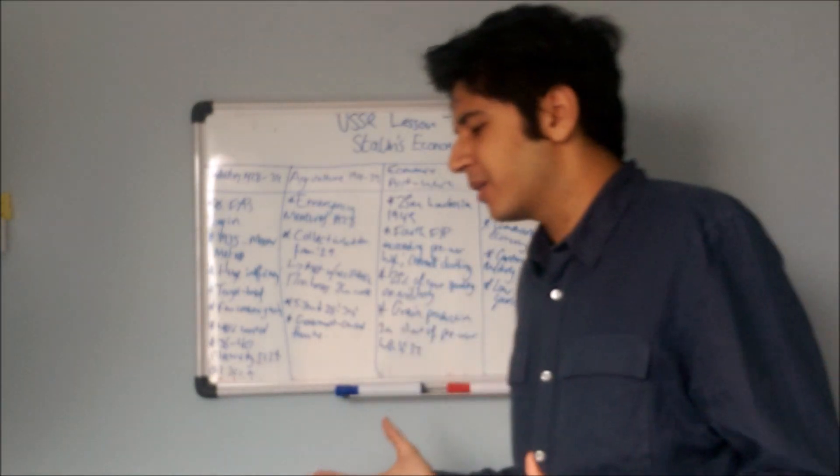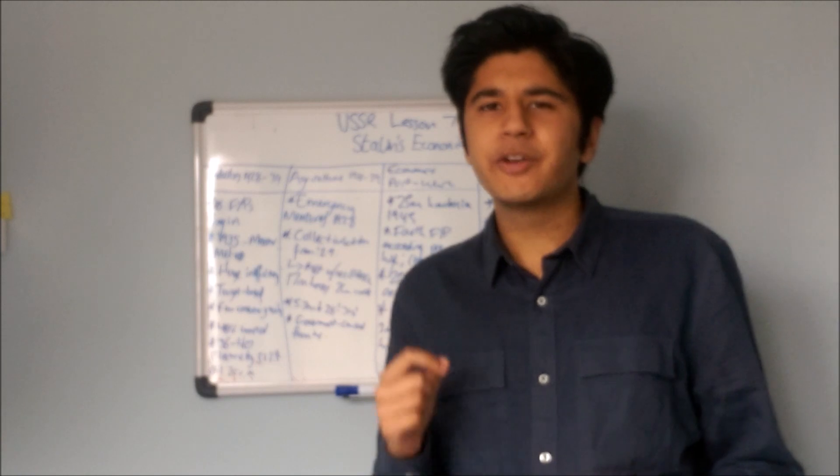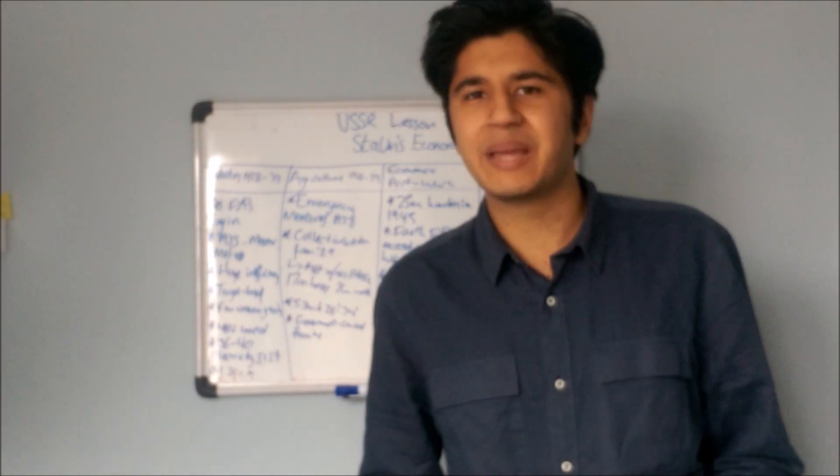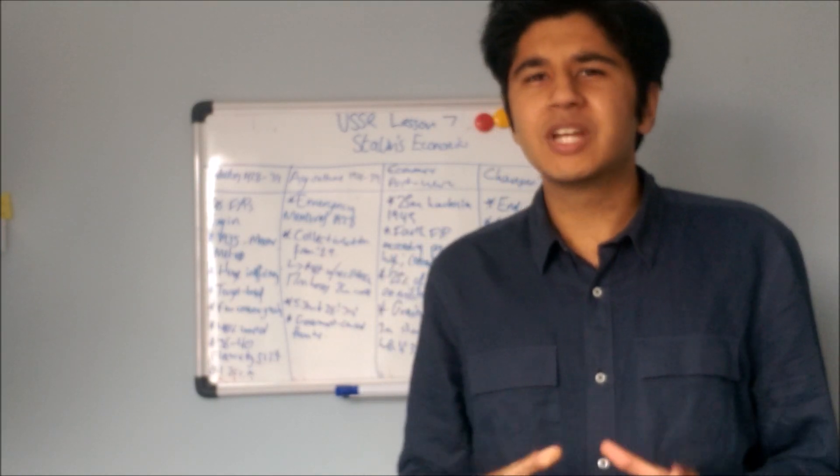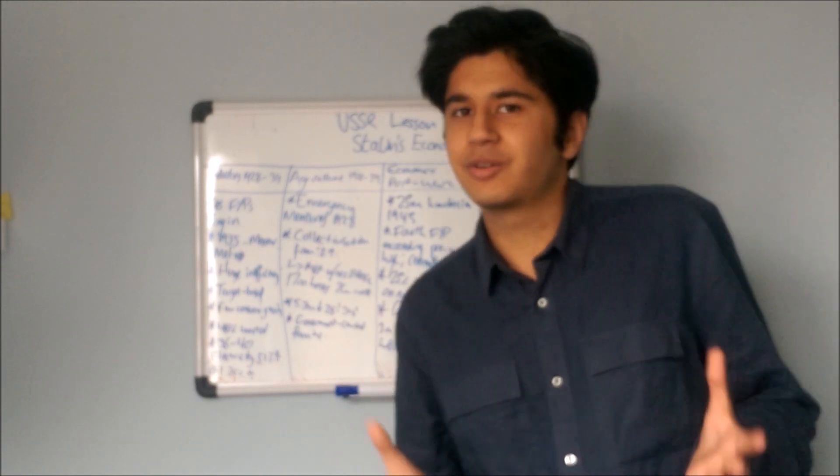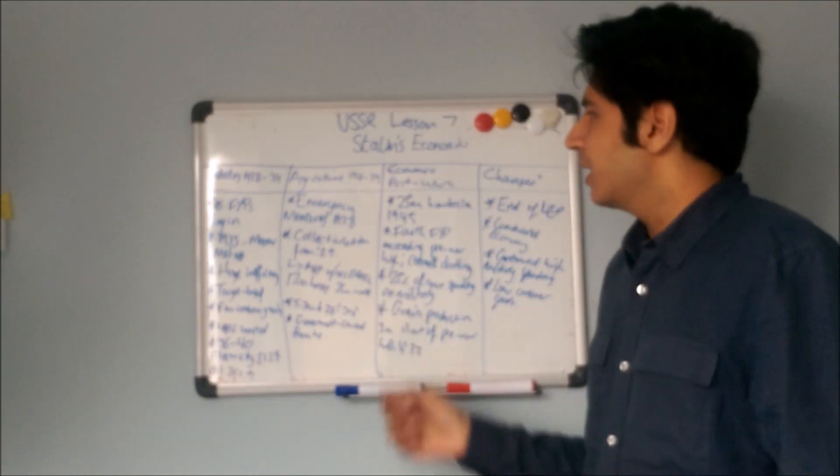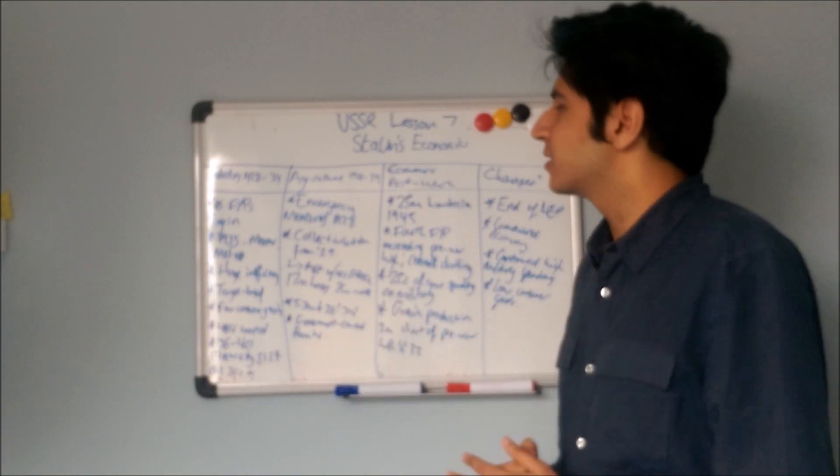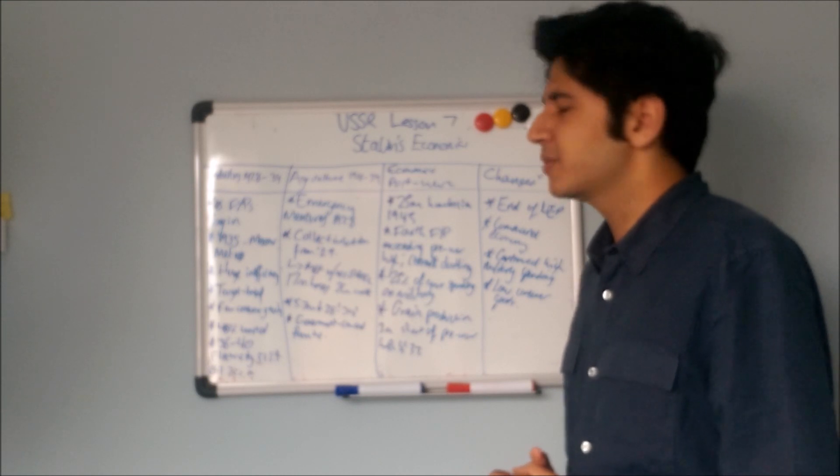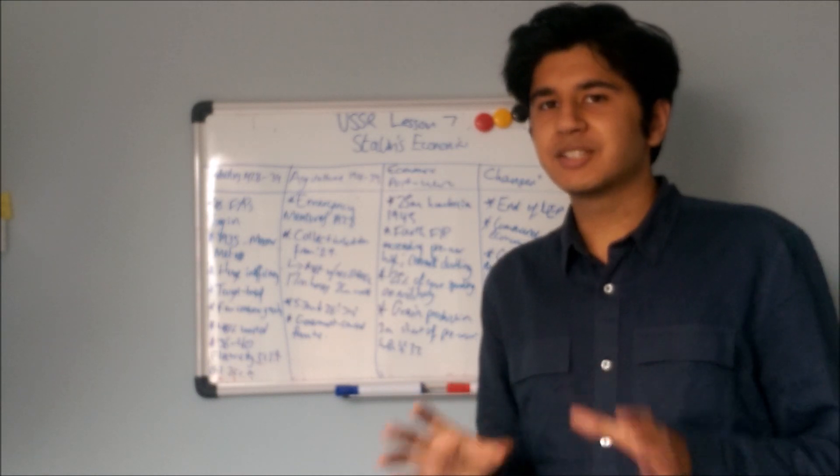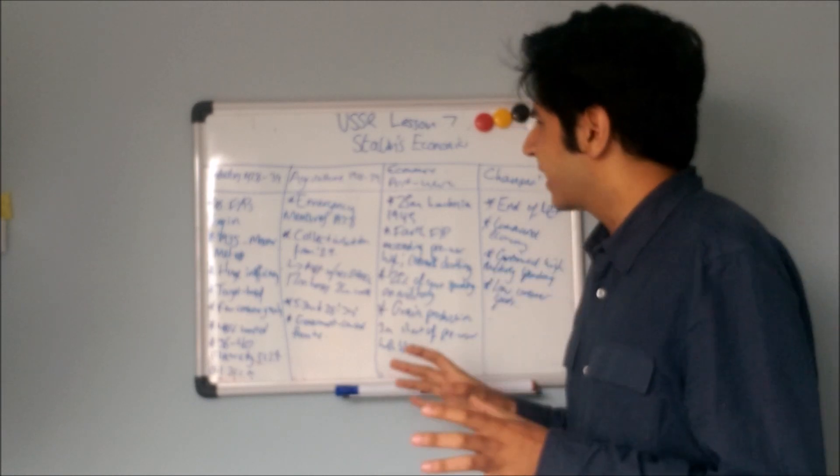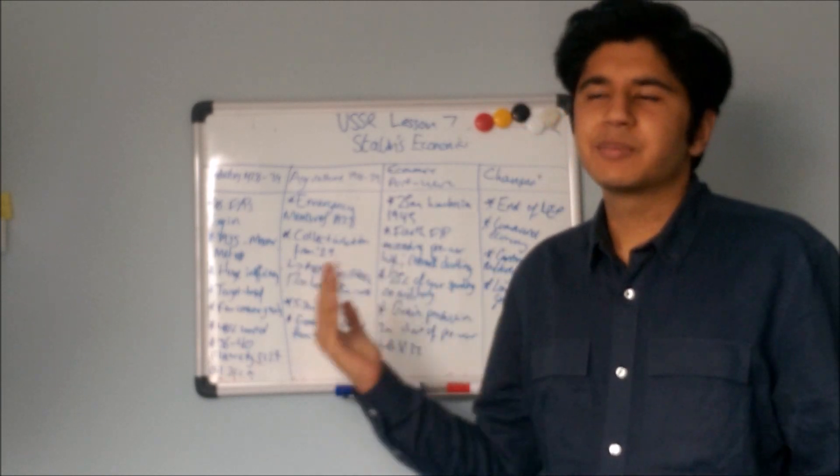Stalin comes to power in about 1928. Notice how I always say about 1928, because we generally say that as the date, but it's not concrete. I feel it's best to split into industry and agriculture at this point, because although they share similar themes, they're different enough to separate.